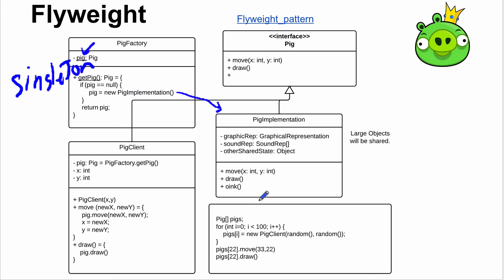Depending on the situation, move() might update the shared state or just change coordinates. The draw() method definitely needs delegation: calling pig.draw() invokes the PigImplementation's draw, which actually renders the pig since it holds the graphical representation. The PigClient just provides the x and y location. That's the Flyweight pattern.